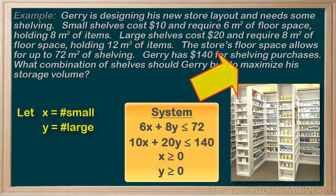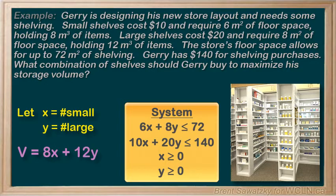Back to our question, we see that we're trying to maximize our volume of shelving space. So our objective function would be a formula for volume. If each small shelf holds 8 meters cubed and each large shelf holds 12 meters cubed, then our total volume would be 8x plus 12y — the total volume for our small shelves plus the total volume for our large shelves. We'll save this equation for our final analysis.